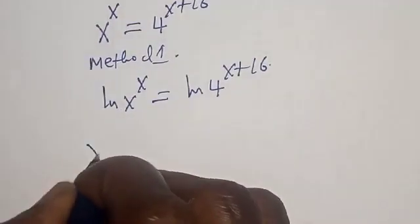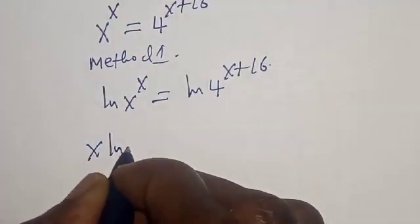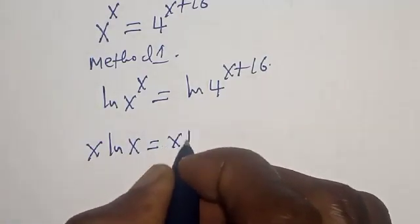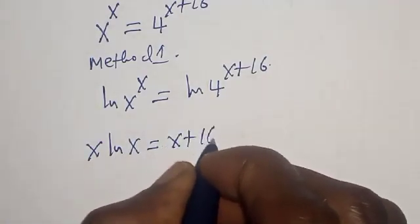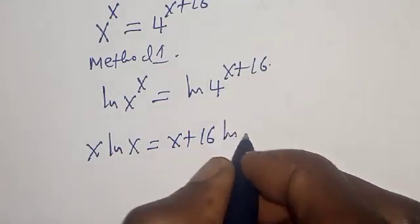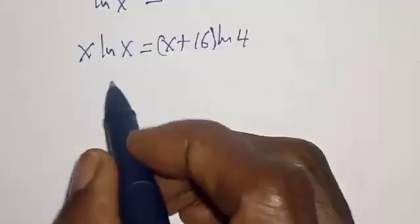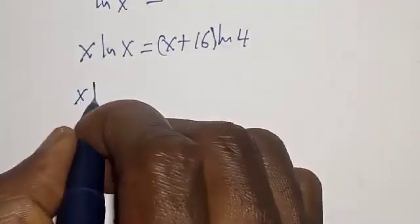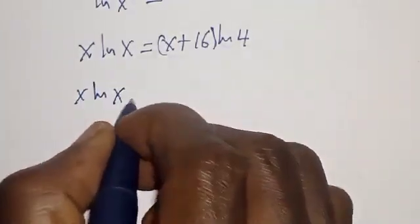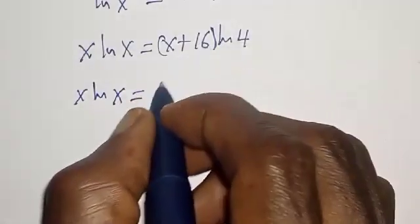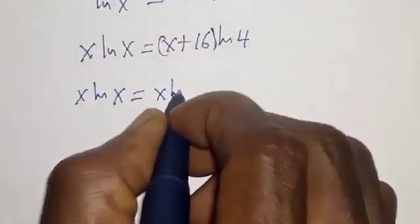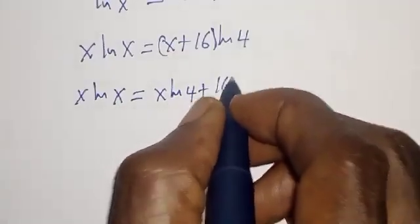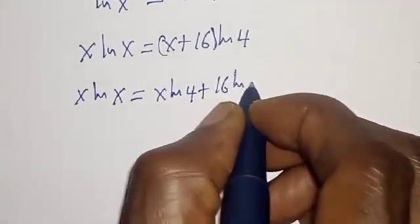Now we have s times natural log of s is equal to s plus 16 times natural log of 4. Let's open the bracket: s natural log of s is equal to s natural log of 4 plus 16 natural log of 4.